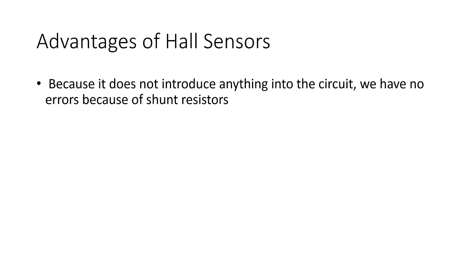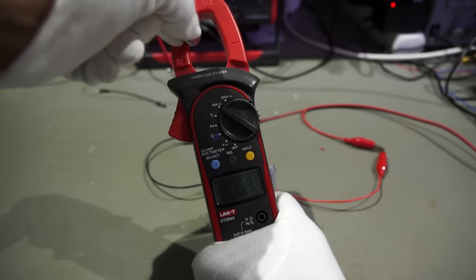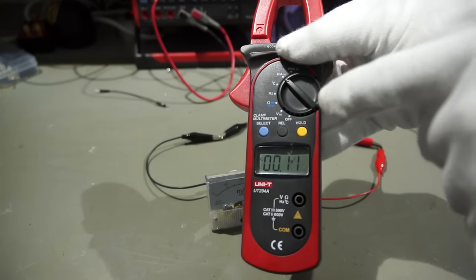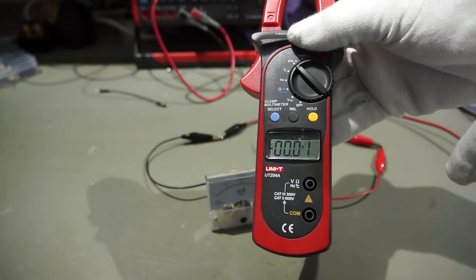These meters have three big advantages. First, because it does not introduce anything into the circuit, we have no errors because of shunt resistors. Second, because there is no connection to our circuit, we have no problems with ground loops. And third, they work for positive and negative currents. Apart from its inability to measure small currents, it has also another big disadvantage. It measures all kind of magnetic fields. If I put a magnet close to its clamp, it shows big currents. This is why these instruments have a button to zero the effects of any existing magnet fields before measuring.